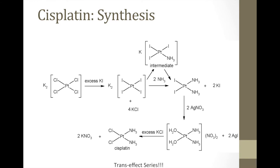Let's take a look at the synthesis of cisplatin. As an inorganic chemist, it's actually a pretty straightforward molecule to synthesize. If you know your trans effect series, you would start with a tetrachloroplatinum group, then substitute all the chlorine groups for iodine groups because those are more reactive. With two equivalents of ammonia, we produce a cis-ammonia group — two ammonia groups in the cis configuration. Using silver nitrate, we replace those iodine groups with water molecules, and then with excess potassium chloride, we produce cisplatin: the platinum complex with two chlorines and two ammonias in the cis conformation.